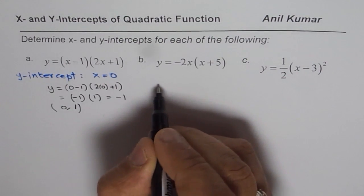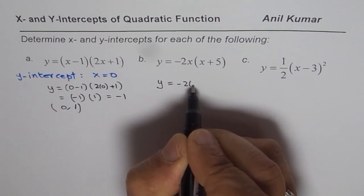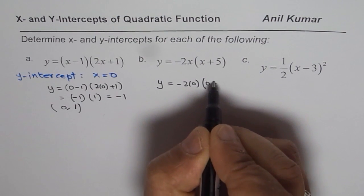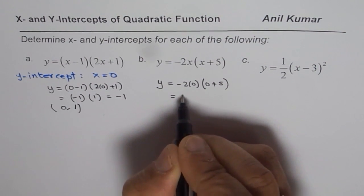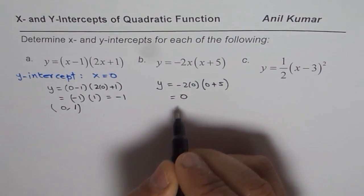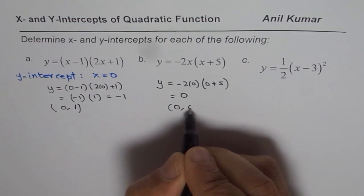In this particular case, if I substitute x as 0, what do I get? I get y equals to minus 2 times 0 times 0 plus 5. As you know, 0 times anything is 0. Therefore, we get y-intercept as 0, which is in fact the origin.